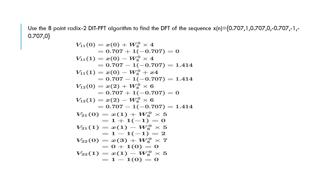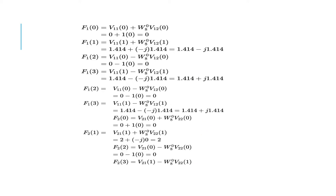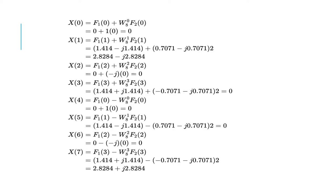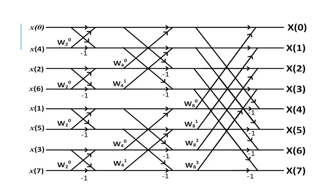Now we enter the actual problems — N equal to 8 point DIT. Use the 8 point radix-2 DIT FFT algorithm to find the DFT of the given sequence x(n). The length of the sequence N is 8. What is shown here is the algorithm-based calculation. I will take the easiest way to solve this problem.